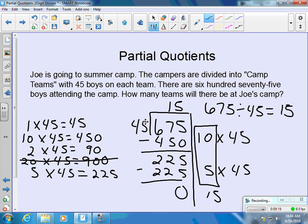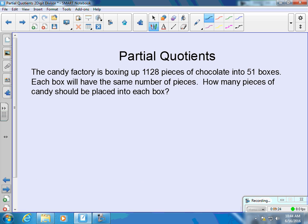And we'll get one more. The candy factory is boxing up 1,128 pieces of chocolate into 51 boxes. Each box will have the same number of pieces. How many pieces of candy should be placed into each box? So in fifth grade, we do use a four-digit dividend along with a two-digit divisor. So this is an example for that. 1,128 pieces of candy. 51 boxes are being used.